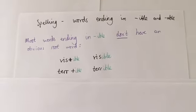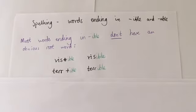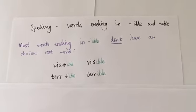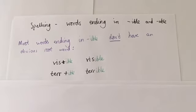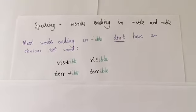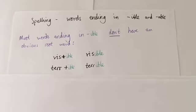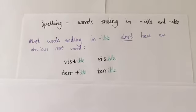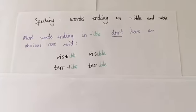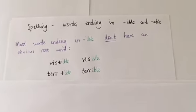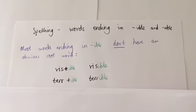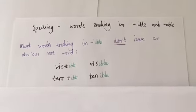It's time to look at some spellings — specifically word endings: -ible and -able. A couple of rules to look at here. Most words ending in -ible don't have an obvious root word. For example, 'vis' plus -ible equals 'visible', and 'terr' plus -ible equals 'terrible'. There's no obvious root word for them, so most words ending in -ible won't have one.